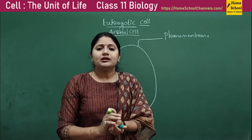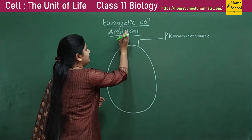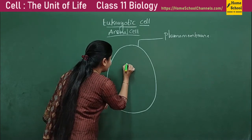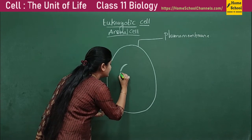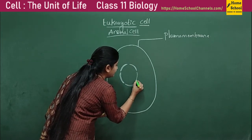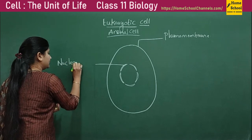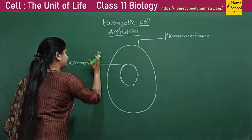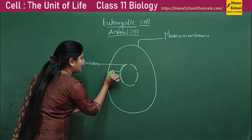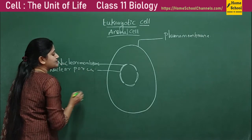The structure of the plasma membrane and how it functions will be covered in later classes. Since it is a eukaryotic cell, we will move on to the nucleus part. There is a well-defined nucleus, meaning it has a nuclear membrane. The small gaps in between the membrane are called nuclear pores.